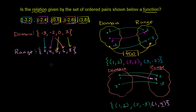So the question is: is this a function? For it to be a function, any member of the domain can only map to one member of the range. Negative 3 maps to 2 — that's fine. But if you put negative 2 into the function, you get confused: do you output 4 or do you output 6? Because there's this confusion — a member of the domain maps to multiple members of the range — this right over here is not a function.